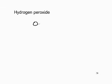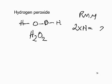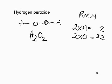Hydrogen peroxide, H₂O₂: two hydrogens each contributing 1, and two oxygens each contributing 16. Total RMM: 34.